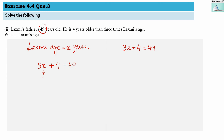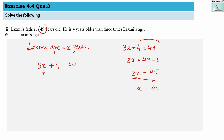3x = 49 − 4, since we are taking 4 to the other side. So 3x = 45. This 3 is in multiplication, so it goes to the denominator as division: x = 45 ÷ 3 = 15. So x equals 15, and this is Lakshmi's age.